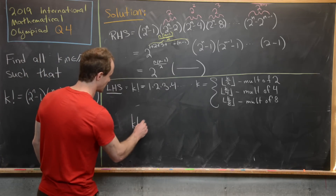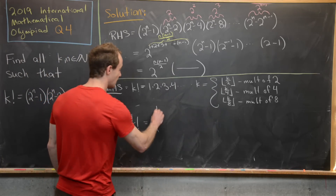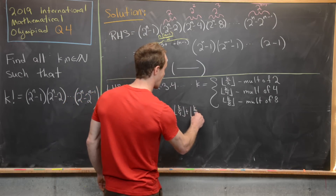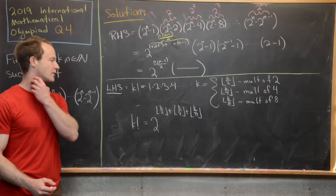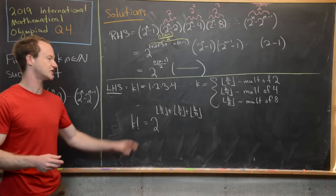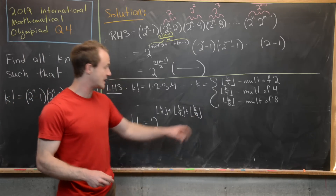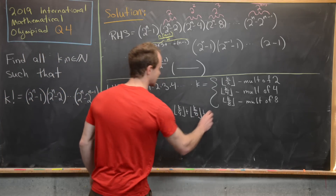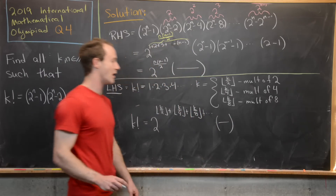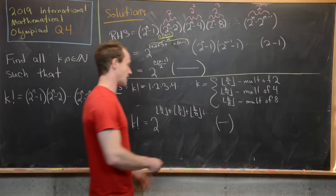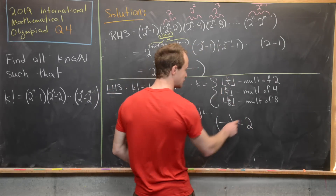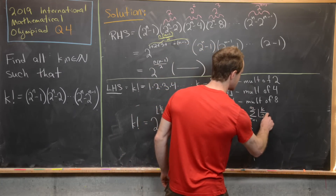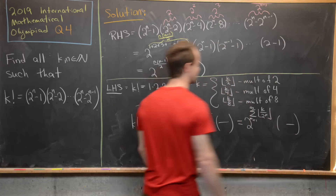So we can write k factorial as two to the floor of k over two, plus the floor of k over four, plus the floor of k over eight, and so on. We don't need to stop because at some point the denominator will be larger than the numerator and we'll just be adding zeros. So we have two to the sum from m equals one to infinity of the floor of k over two to the m, times a bunch of other stuff — whatever's left over after factoring those twos out.